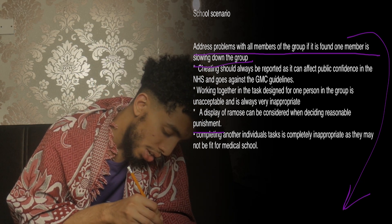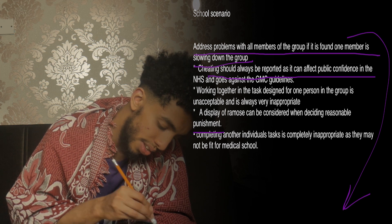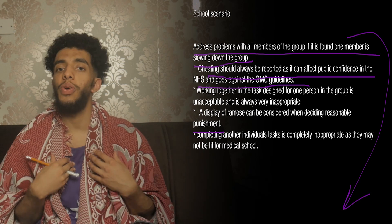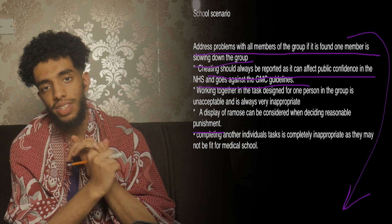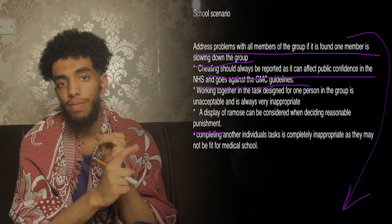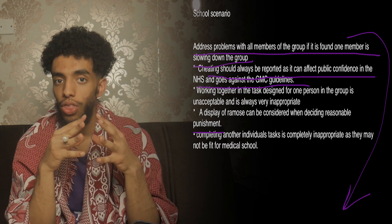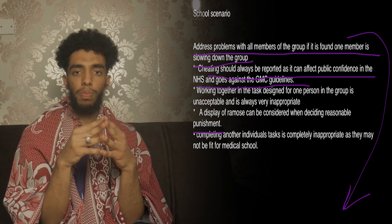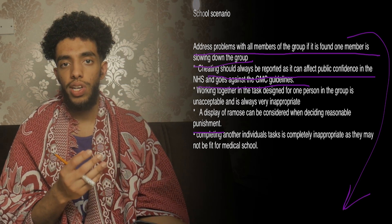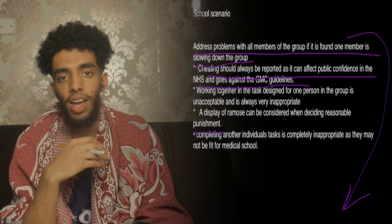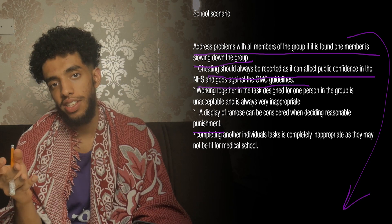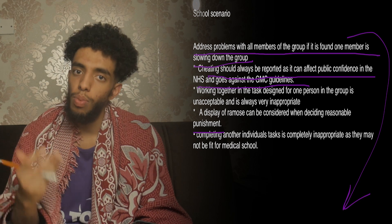The second point is that cheating should always be reported as it can affect public confidence in the NHS and goes against GMC guidelines. We don't want to be a snitch, but if your uncle, sister, or brother were in hospital, you wouldn't allow an unfit doctor to treat them. It would be a double standard to allow other people's family members to be treated by that doctor. You need to report the person — it's something you have to do, especially for this exam.